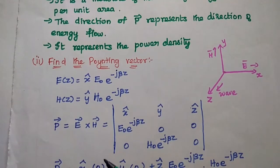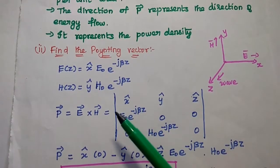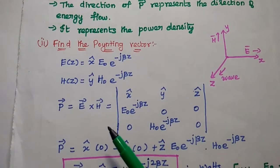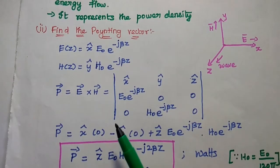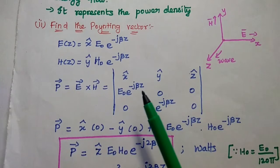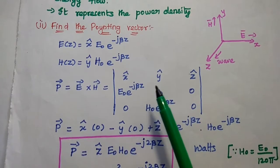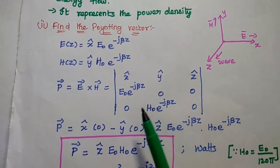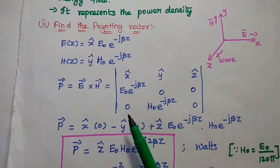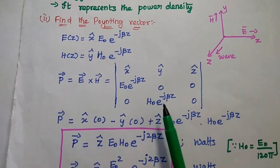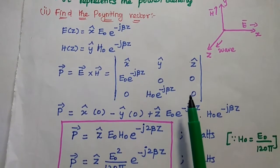H₀ is the magnitude of the magnetic field intensity and β is the phase shift constant. x and y represent the direction. To find the Poynting vector, we take the cross product of E and H using the determinant with x, y, z components. The x-component of E is E₀ e^(−jβz), with no y or z components. For H, only the y-component is H₀ e^(−jβz), with x and z components equal to zero.